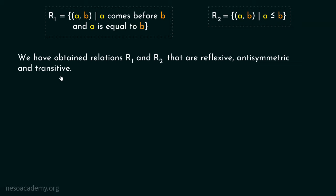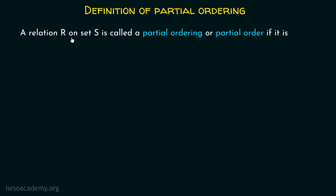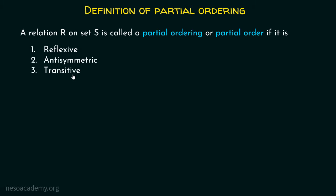Now it's time to understand the definition of partial order or partial ordering. A relation R on set S is called a partial ordering or partial order if it is reflexive, anti-symmetric and transitive. The only difference between a partial order and an equivalence relation is that in case of an equivalence relation, we have the symmetric property and not the anti-symmetric property. Rest of the properties are similar.